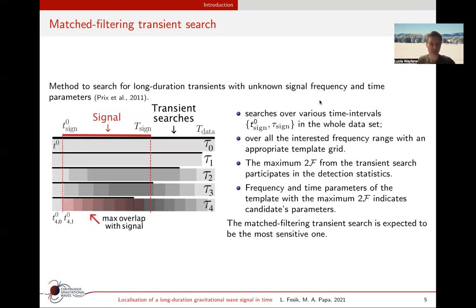To search for a transient signal of unknown duration, one can perform the matched filtering search. Search over different possible signal durations in the data with the corresponding template grid in the frequency. In the case of the detection statistics based on the loudest candidate, the maximum 2F value, the analysis doesn't care about the physics of the signal.